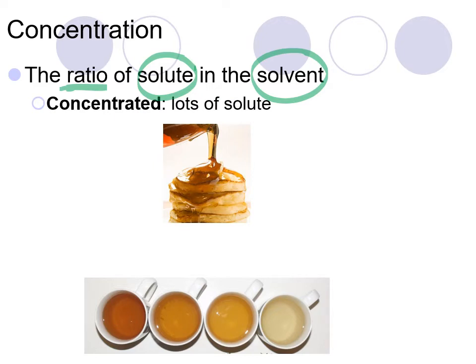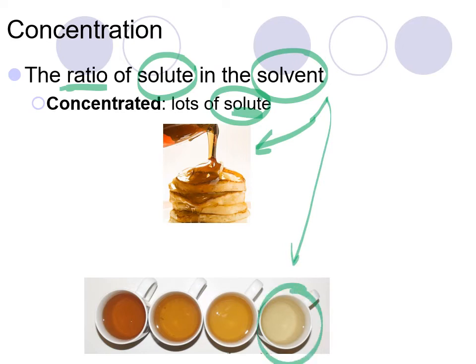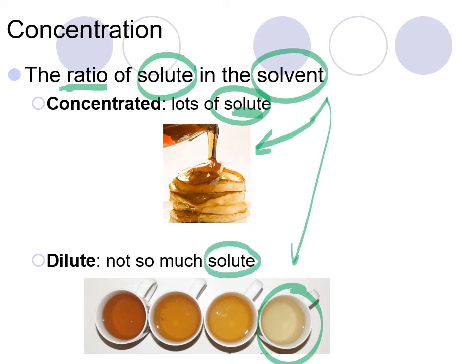Because a solution's proportions are variable, you have the option of changing its concentration — the ratio of how much solute you have to how much solvent. You could have a concentrated solution with lots of solute, like syrup, which has lots of sugar dissolved in water. When sap comes out of a maple tree it has very little sugar, so it would be referred to as a dilute solution. You could add more solute to make it more concentrated or reduce it to make it more dilute.